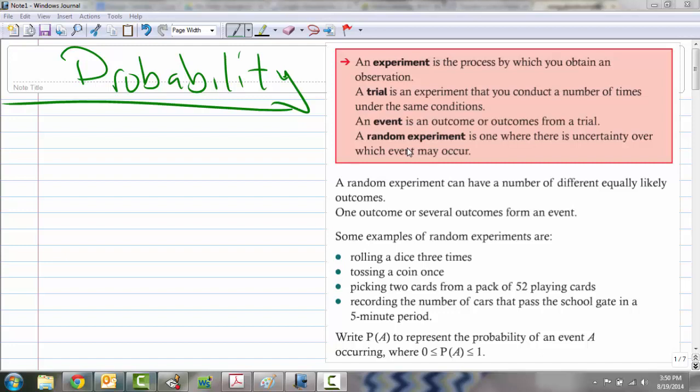So flipping a coin, flipping heads is an event, flipping tails is an event. If we're rolling a die, getting a 1, 2, 3, 4, 5, or 6 could be an event, or a combination of those. Maybe the event is rolling an even number that would consist of three different outcomes, rolling a 2, 4, or a 6. So random experiments are things where there's uncertainty over which may occur, such as rolling a dice, tossing a coin, picking cards out of a deck, or recording number of cars that pass the school gate.